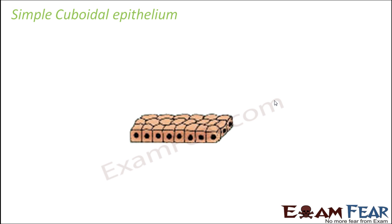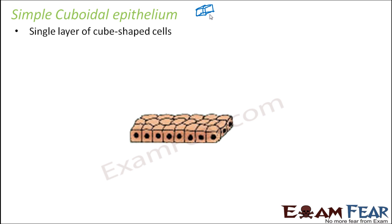Let us move on to simple cuboidal epithelium. Since it is a simple epithelium, there is only one layer of cells, and it is cuboidal, so the shape has to be something like a cuboid. Simple means one layer, cuboidal means the shape of a cuboid. So now the question is, what is their function and where are they found? They are a single layer of cube-shaped cells.